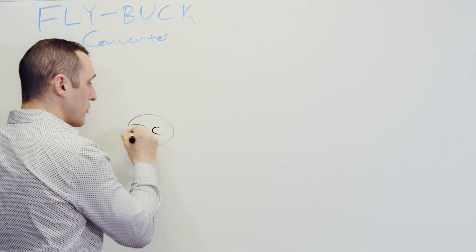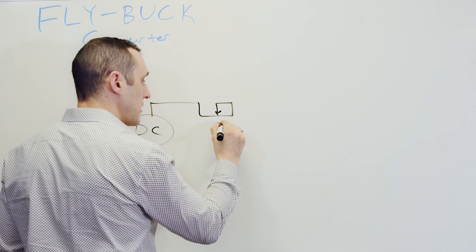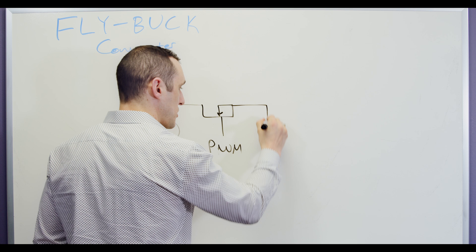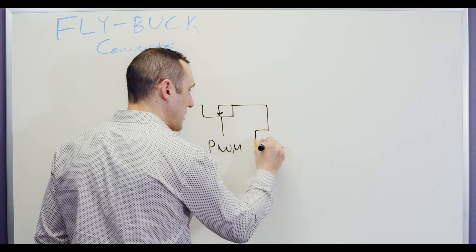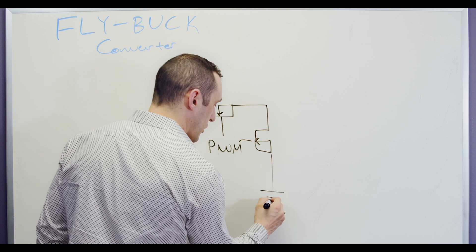Now our fly buck converter would basically look something like this. We have our first switching element, and that goes to our PWM signal. We have our second switching element or our rectifying element that's over here. This is also going to our PWM signal, and then we have a ground over here.